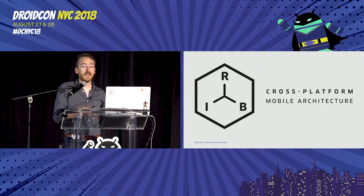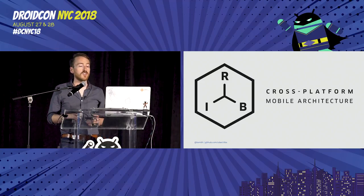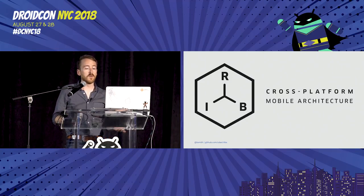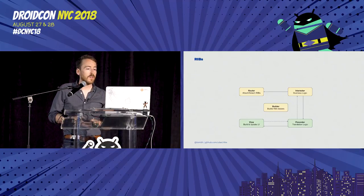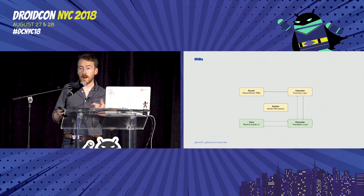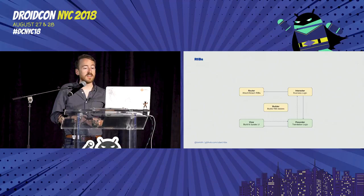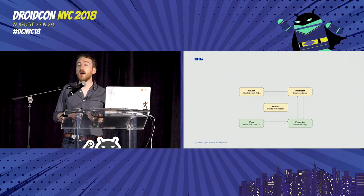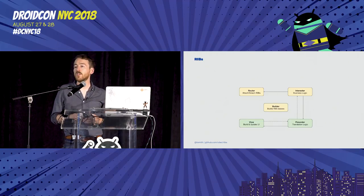RIBS is implemented natively on Android and iOS, but the domain language and concepts are shared between platforms, so developers can work together for better collaboration and design. A RIB unit is defined by a builder which creates the other components of the RIB, an interactor to manage business logic, and a router to help with routing between RIBs. Since we wanted the application state tied to business logic rather than the view tree, RIBS encompasses an optional view and presenter to manage data model translations, layout animations, and that sort of thing.